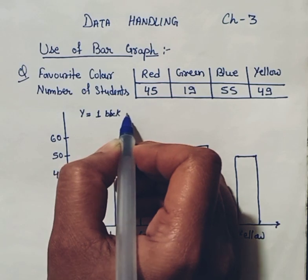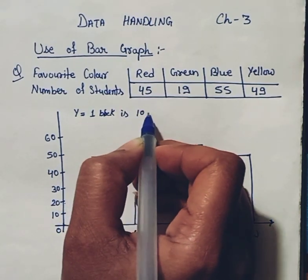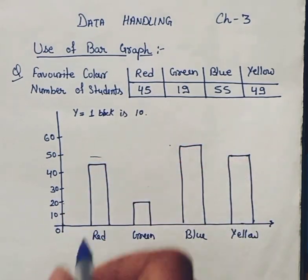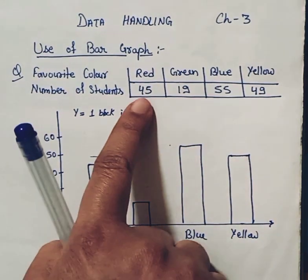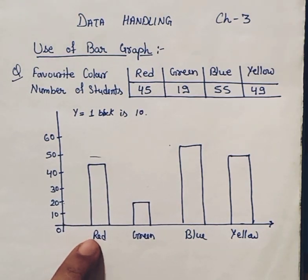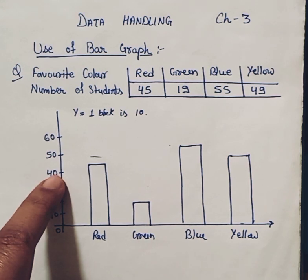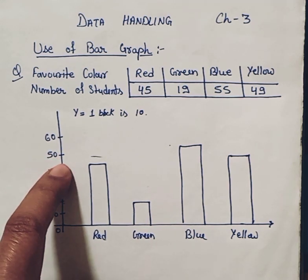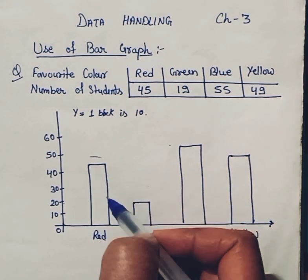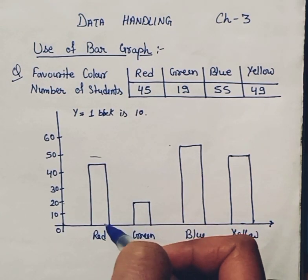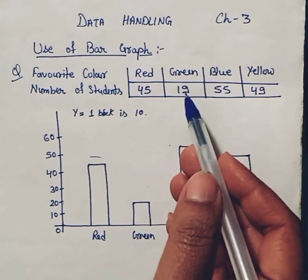Starting from red color, which is liked by 45 students, we find the midpoint between 40 and 50, which is 45, and just plot a straight line or a box over here for red color. Further, for green color, which is 19, we go just below 20.